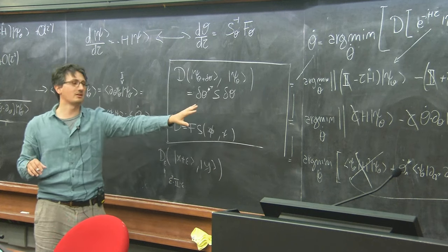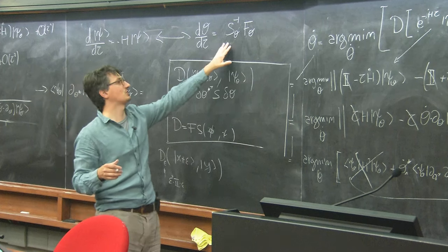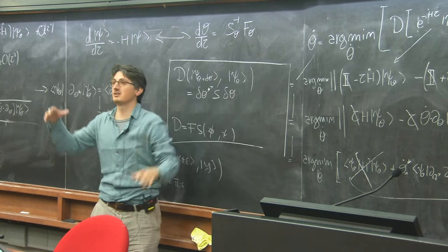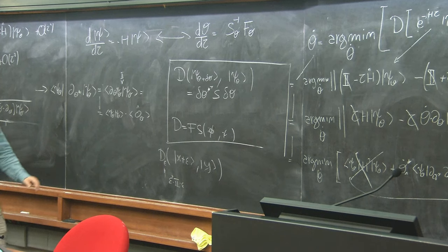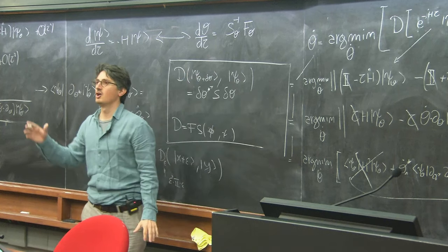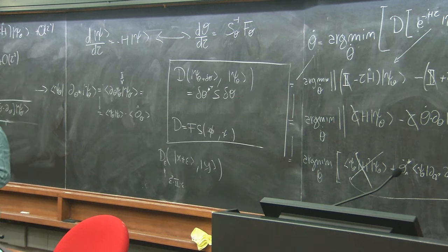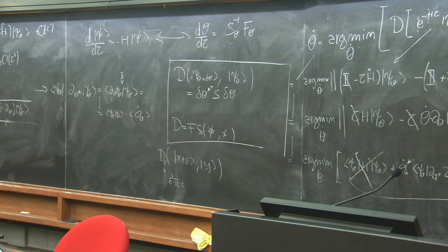By inverting this S matrix, I'm taking the gradient of the energy computed according to the Euclidean metric of parameter space and pulling it back to the space of wave functions — changing it from Euclidean distance to Hilbert-Schmidt distance. You can find this proof in the original paper on natural gradient descent by Amari in 1999.